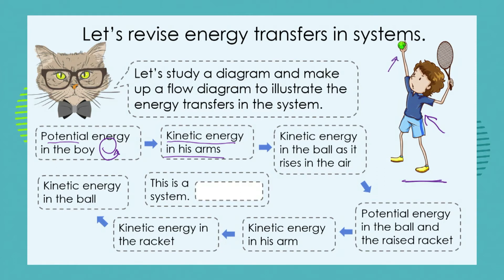He has two arms and they're doing two different things. The kinetic energy is being transferred from his arm to the ball, and the ball is going to fly up and rise into the air. The potential energy in the ball at the top of its arc, and the energy in the racket, are going to be transferred into kinetic energy when the racket hits the ball.